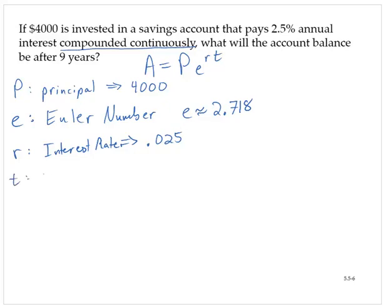T is the time in years. In this problem, it is 9. The A is the value after T years.